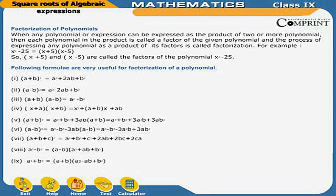The following formulae are very useful for factorization of a polynomial: (a + b)² = a² + 2ab + b²; (a − b)² = a² − 2ab + b²; (a + b)(a − b) = a² − b²; (x + a)(x + b) = x² + (a + b)x + ab; (a + b)³ = a³ + b³ + 3ab(a + b) = a³ + b³ + 3a²b + 3ab².